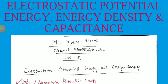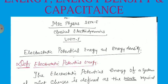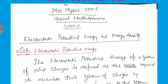Good morning to everyone. Today we will discuss the MSc Physics, Semester Past, Classical Electrodynamics, Unit One. We will discuss three important topics: number one, the electrostatic potential energy; second, the energy density; and third, the capacitance. This is only the recapitulation of the UG class contents. So we start from the definition of electrostatic potential energy.